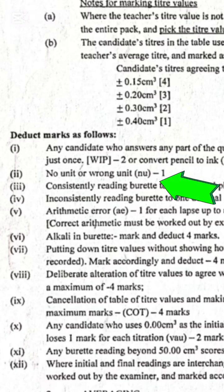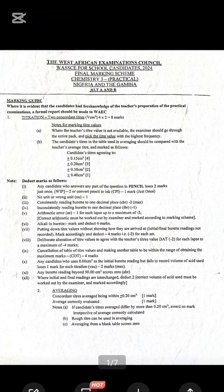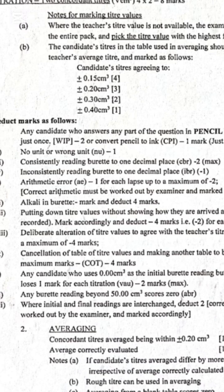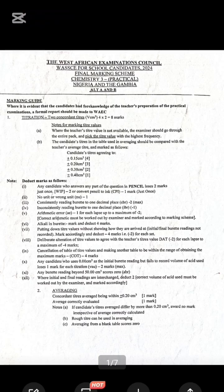Number two: no unit or wrong unit — either one — is minus one. That makes minus three now. Number three: consistently reading the burette to one decimal place — we call it CBR — that's minus two. When you add that to minus three, it gives us minus five.